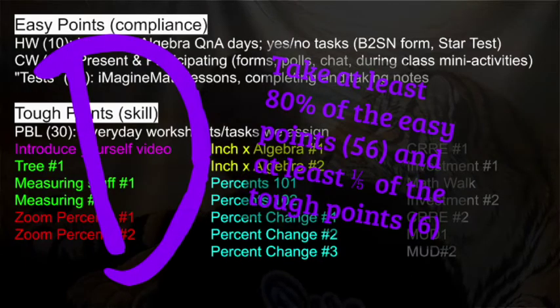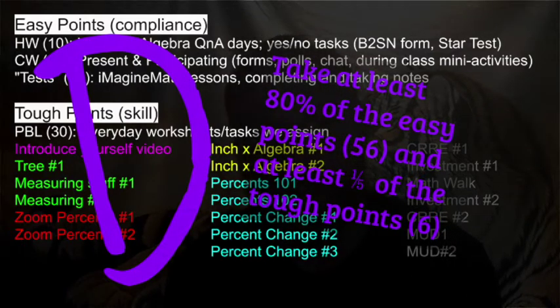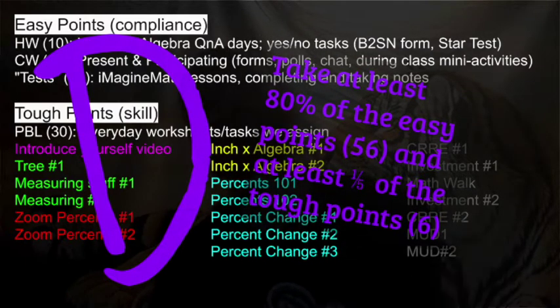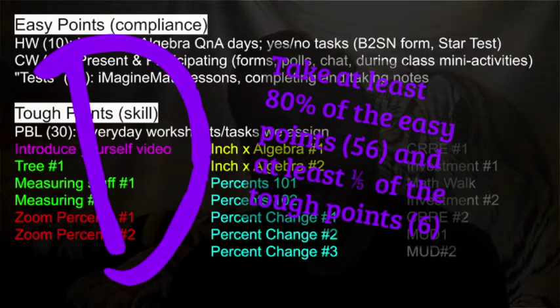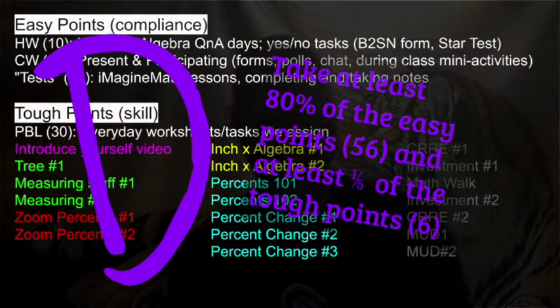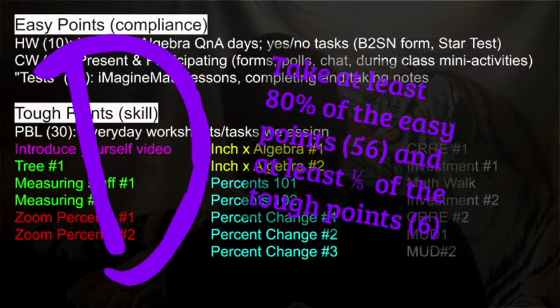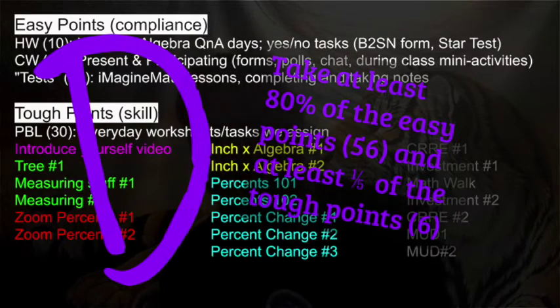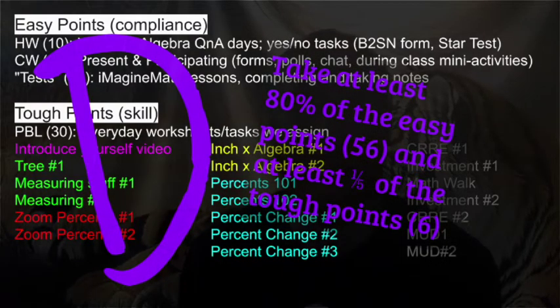Mr., all I want to do is pass. My recommendation for you: take at least 80% of the easy points and you need to take one out of five tough points. That will translate to 56 plus 6, a 62.